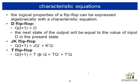Another way to express flip-flop behavior is through characteristic equations. For the D flip-flop: Q(t+1) = D. For the JK flip-flop: Q(t+1) = J·Q̄ + K̄·Q. For the T flip-flop: Q(t+1) = T ⊕ Q, which is the exclusive-OR of T input and the current Q output.